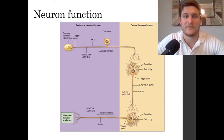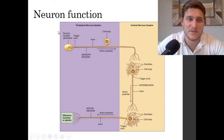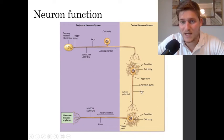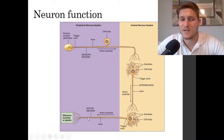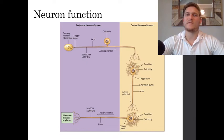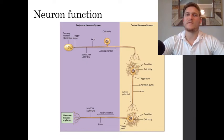Here we see another overview of communication between the peripheral and central nervous system. Sensory neurons pick up on sensory inputs via receptors, and then that information is sent to the central nervous system. Interneurons communicate within the brain and the spinal cord to deliver messages. Motor neurons transport information from the central nervous system to different glands, muscles, or organs of the body.